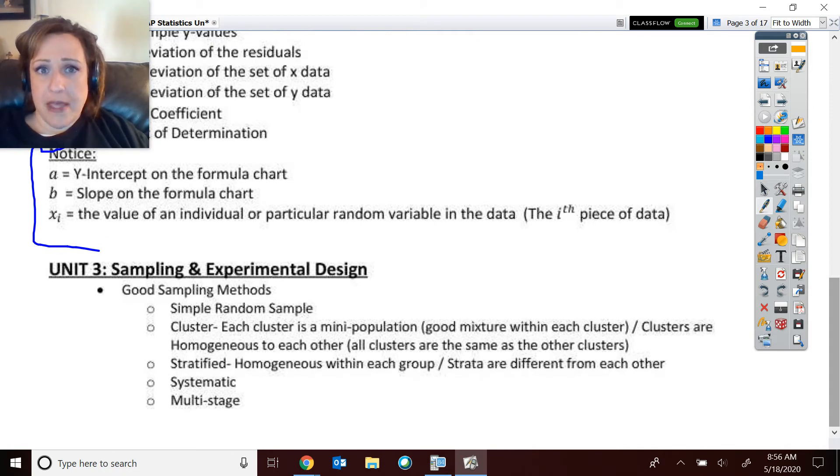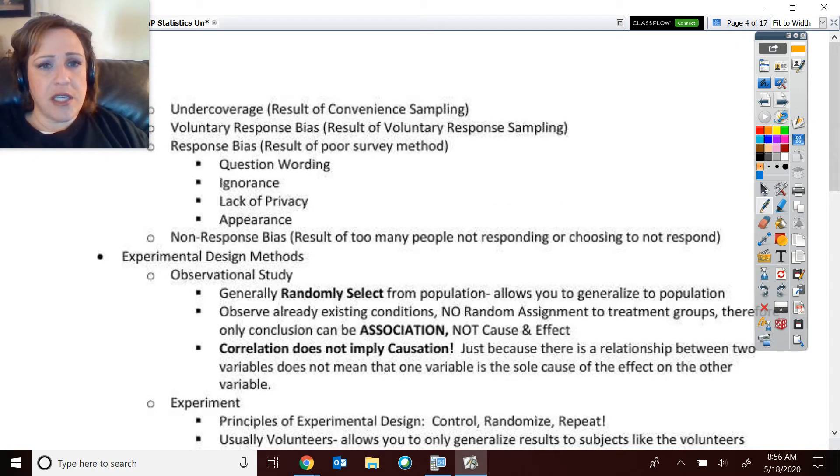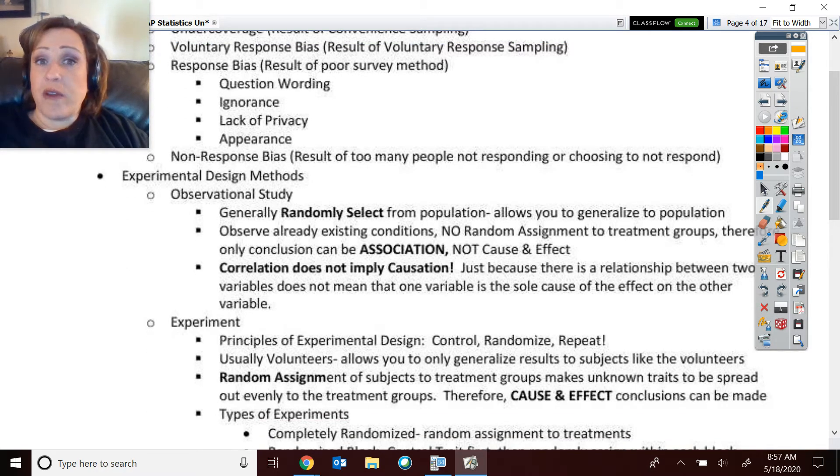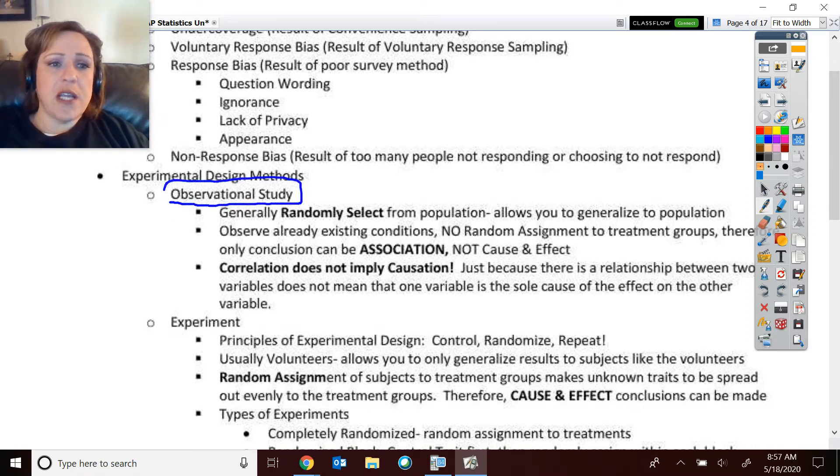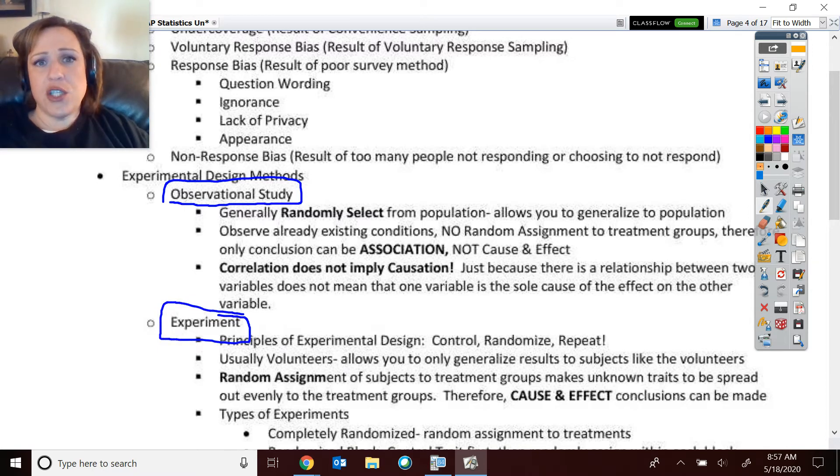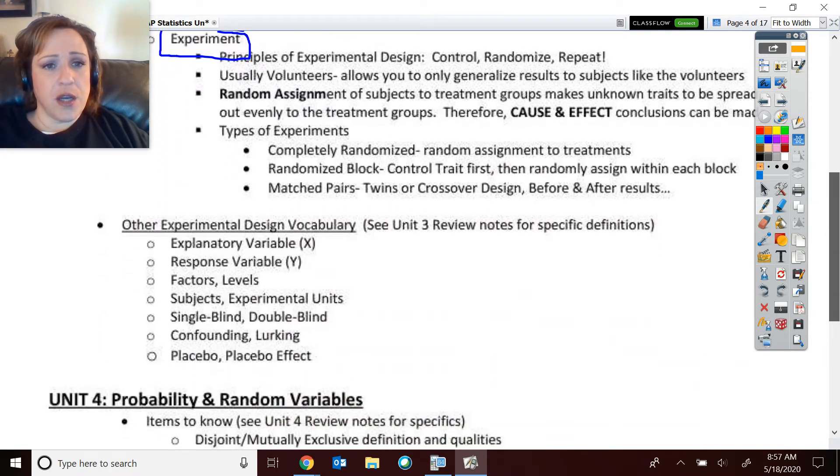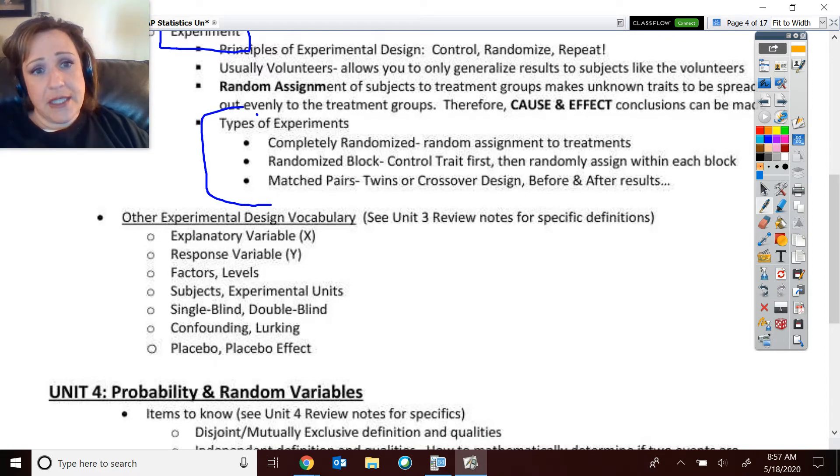Now, we go into sampling methods and experimental design. Very just vocabulary-based. We've gone through a lot of those. You have the songs. My students typically do well on experimental design. So we're going to keep going. I'll just let you read them. Paying attention to, and remember, we have the thinking maps about what observational studies, who you can generalize to, experiments, who you can generalize to, what conclusions you have the right to make. Can you do correlation, or can you say cause and effect? The three different types of experiments: completely randomized, a block, randomized block, where you controlled the trait first and then randomly assigned, or your matched pairs. And then just a few other little random vocabulary items there.